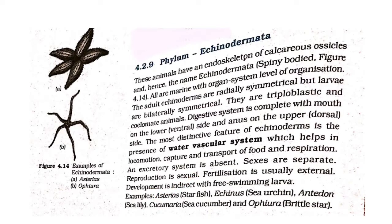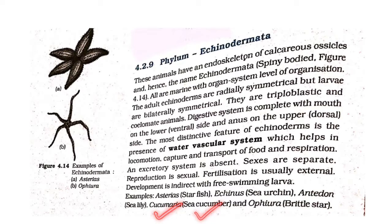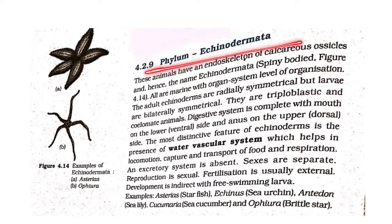Examples of Echinodermata include: Asterias (starfish), Echinus (sea urchin), Antedon (sea lily), Cucumaria (sea cucumber), and Ophiura (brittle star).